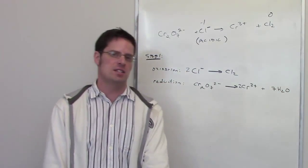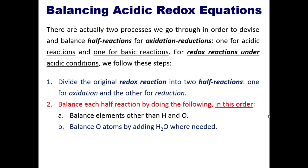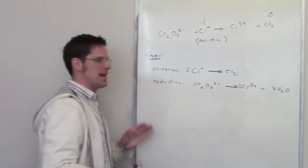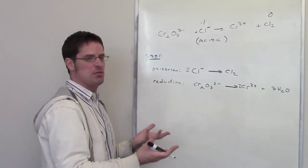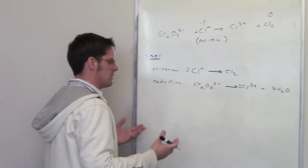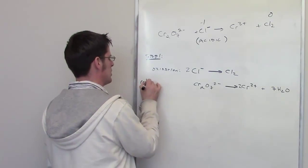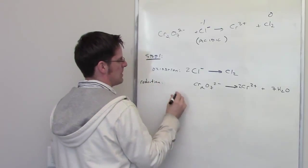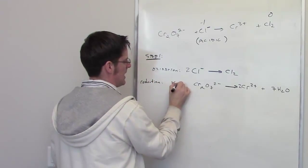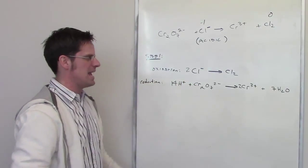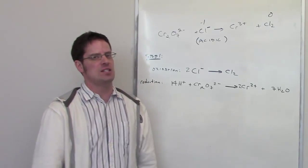The next step says balance hydrogen atoms by adding H⁺ where needed. By adding 7 H₂O, we now have 14 hydrogen atoms on the right that weren't there before. To fix that, I add 14 H⁺ to the left side of the reduction half-reaction. Now the hydrogens are balanced.